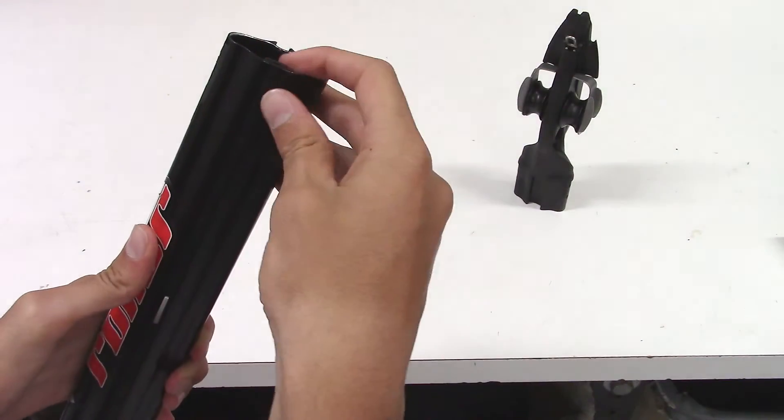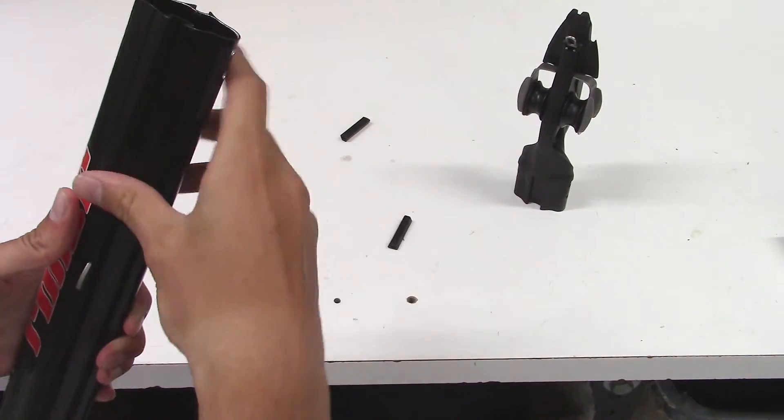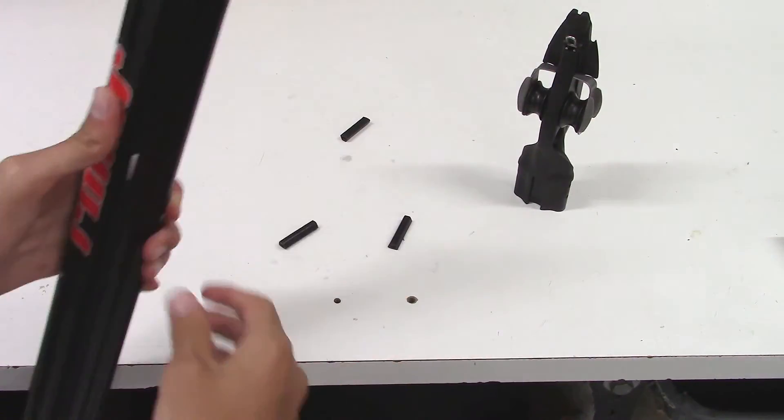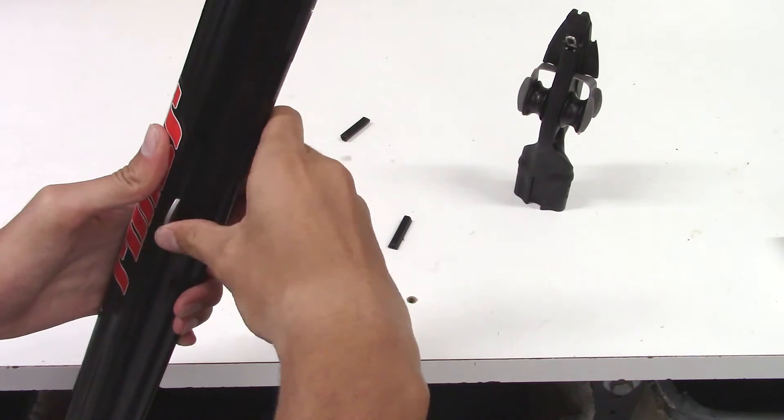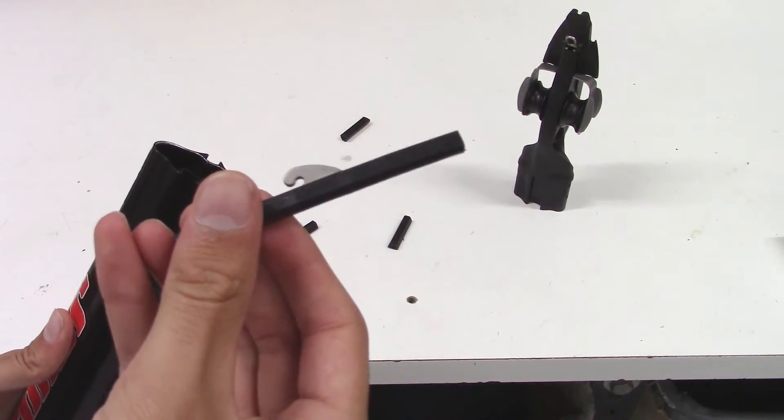At this point you can now remove the spacers and the loading tabs. Make sure not to lose any of the spacers since they will all have to be reinstalled. You can position the loading tabs anywhere on the barrel that you want.